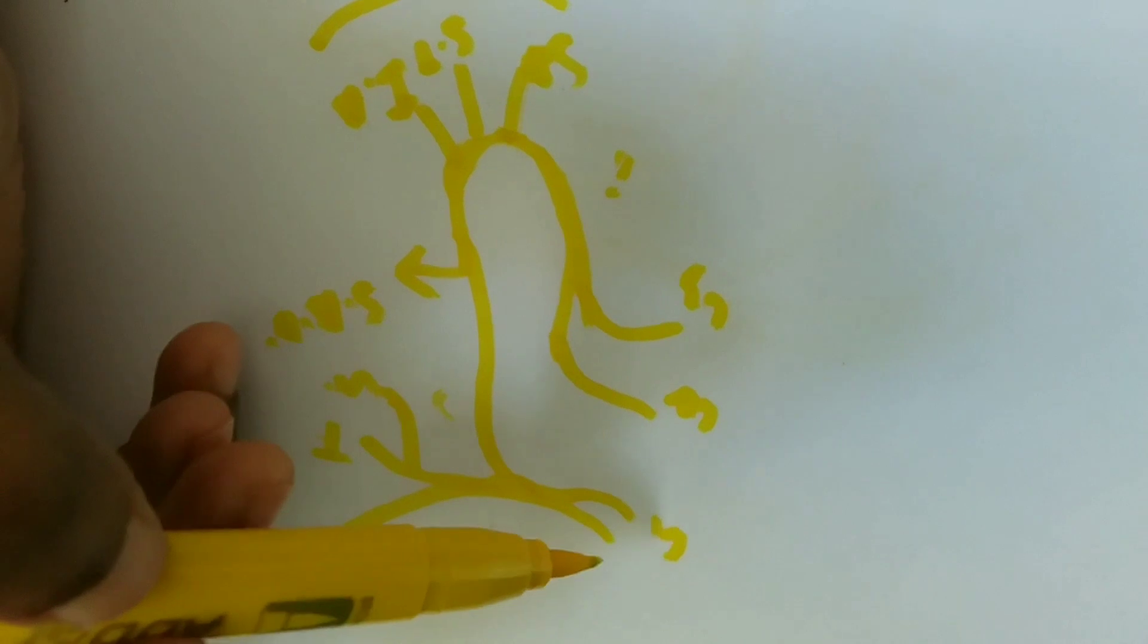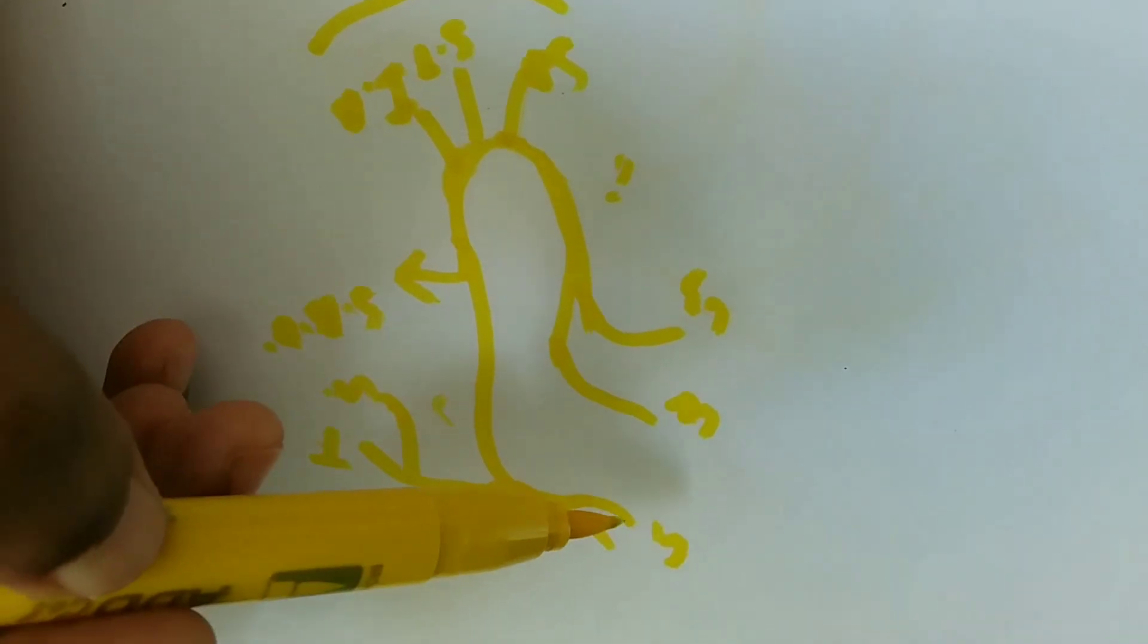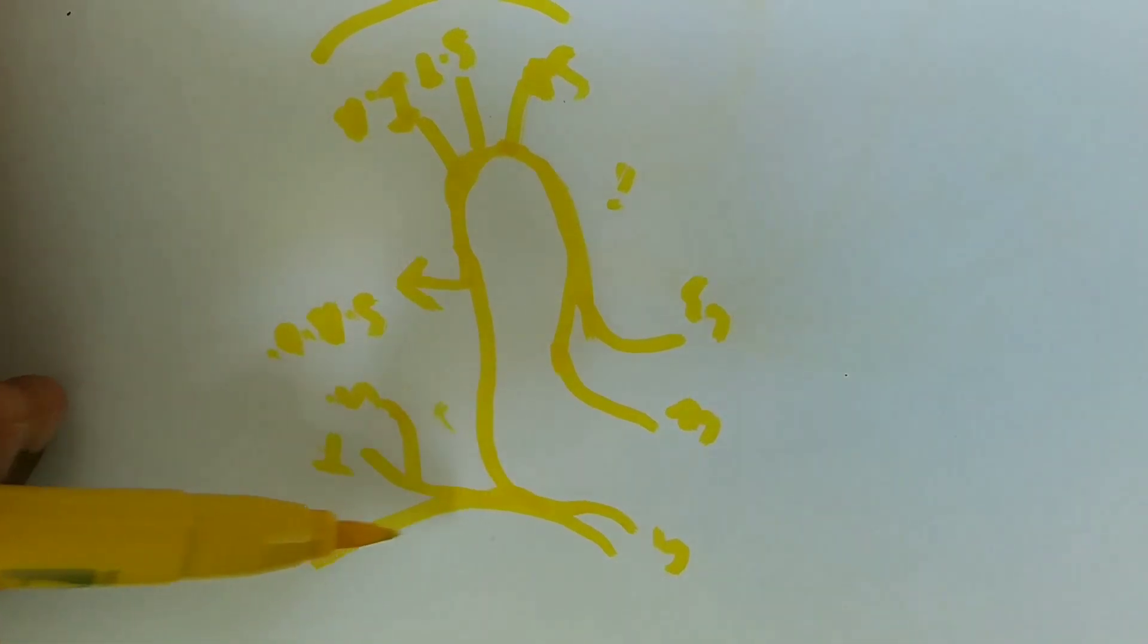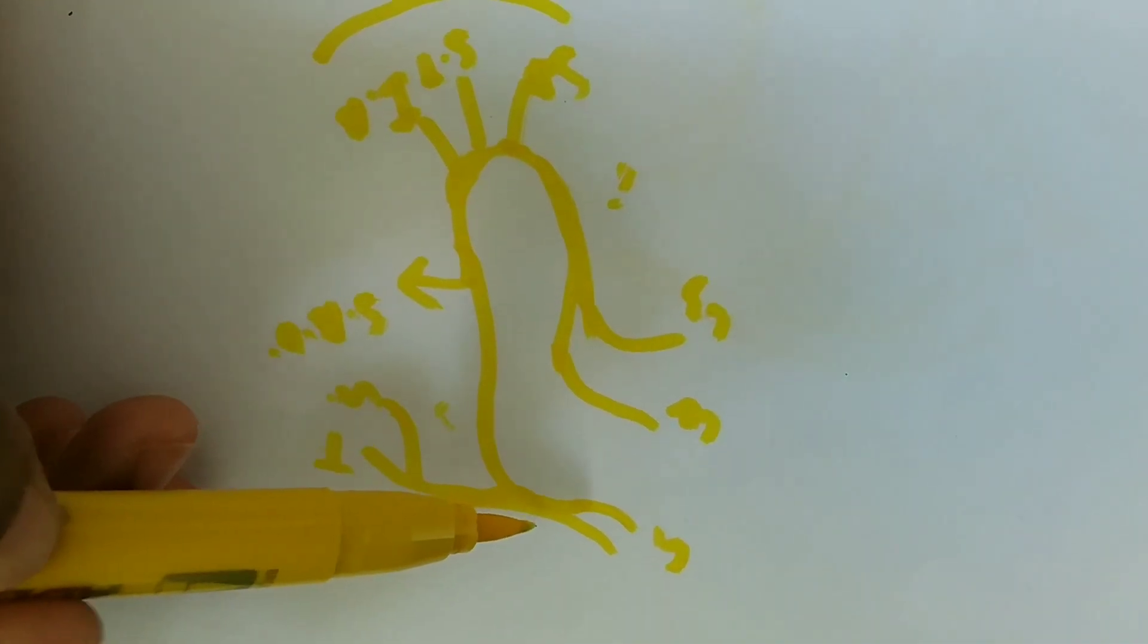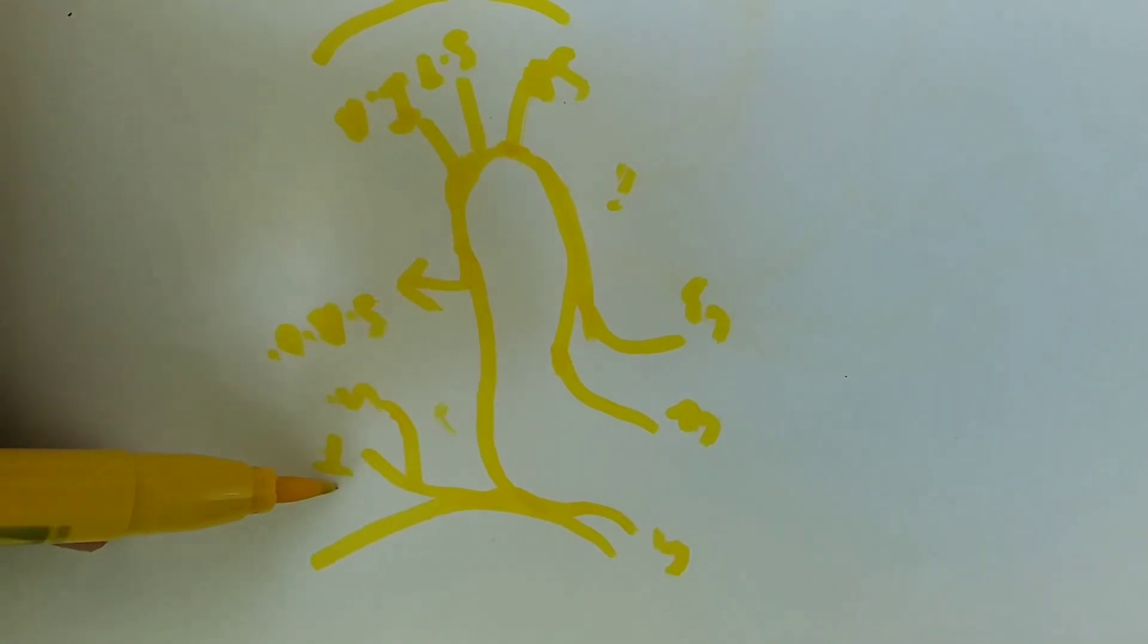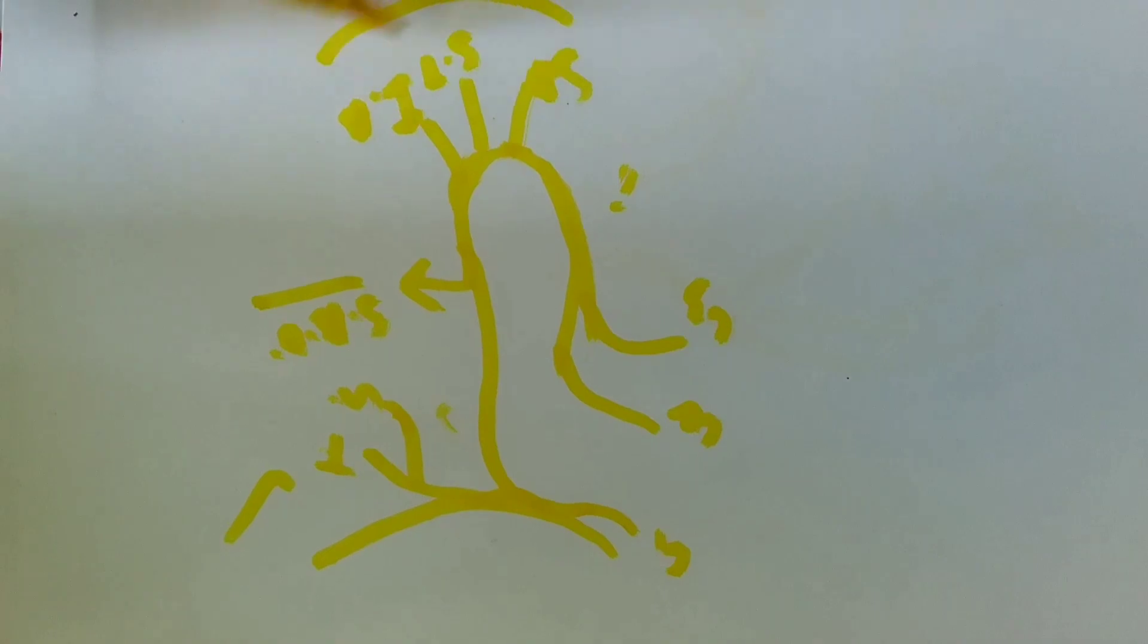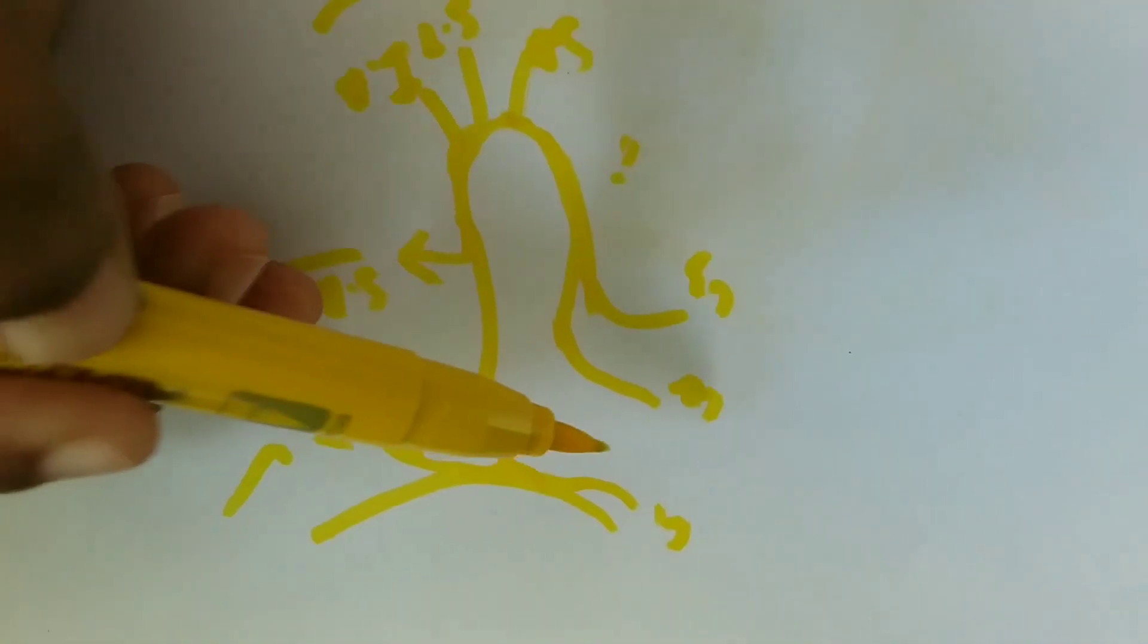So the MCQ is ventral rami or dorsal rami. You should answer as ventral rami of C1, C2, and C3. And then the one which communicates here is the hypoglossal nerve that alone supplies the thyrohyoid and geniohyoid. Superior root alone supplies superior belly of omohyoid, and the inferior root supplies all three muscles.